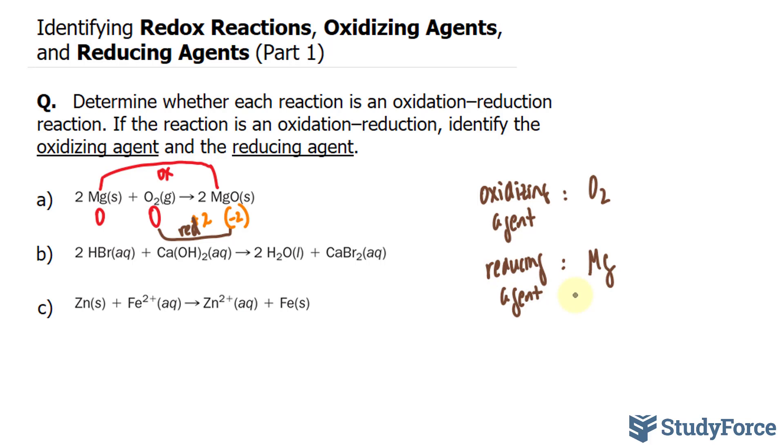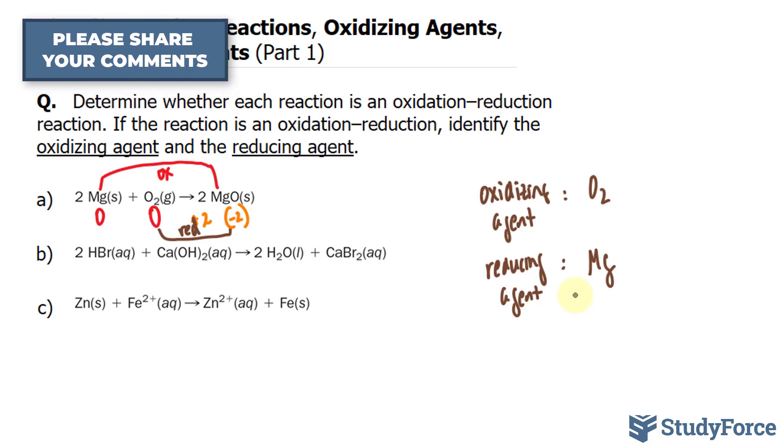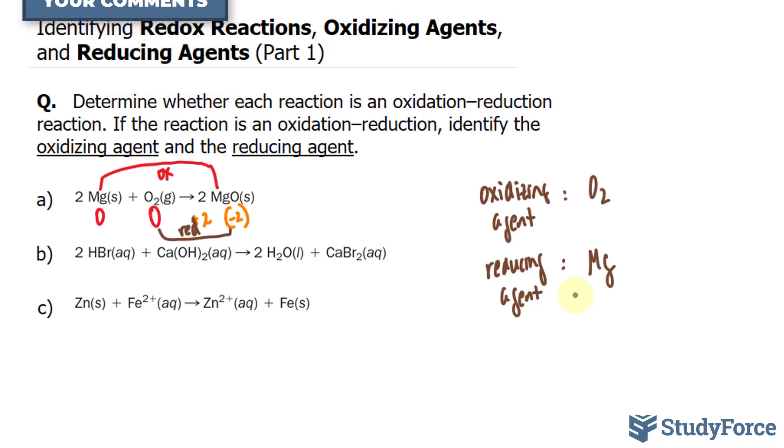That's the answer to question A. Let's move on to question B. We have 2 HBr + Ca(OH)₂ → 2 H₂O + CaBr₂. Let's see if this is an oxidation-reduction reaction.